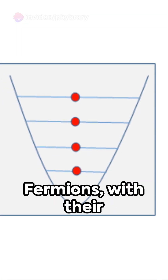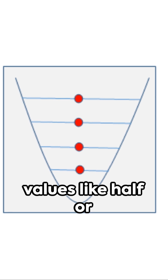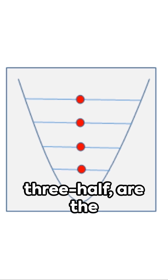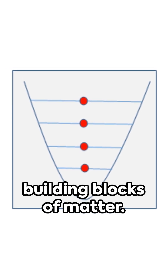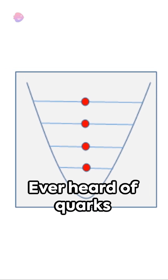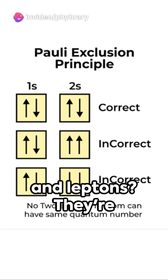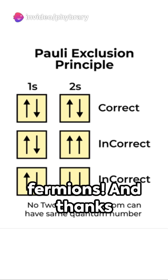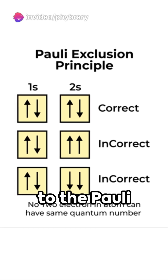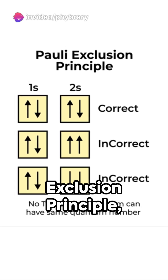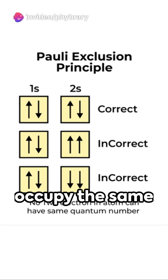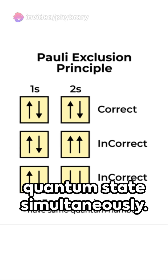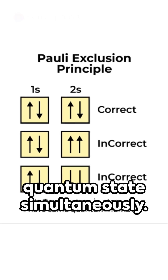Fermions, with their half-integer spin values like one-half or three-halves, are the building blocks of matter. Ever heard of quarks and leptons? They're fermions, and thanks to the Pauli exclusion principle, no two fermions can occupy the same quantum state simultaneously.